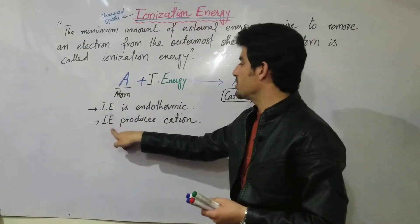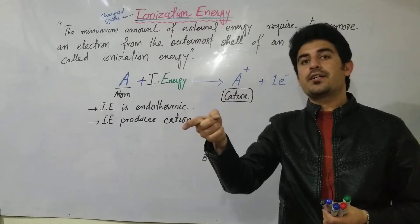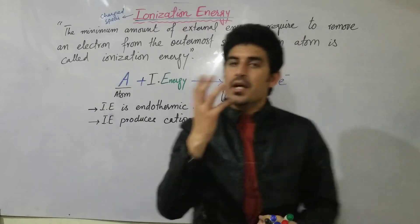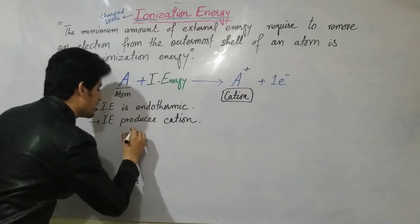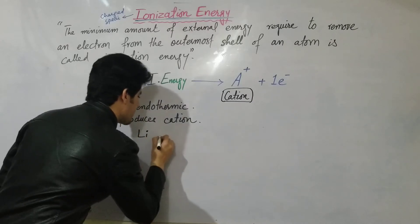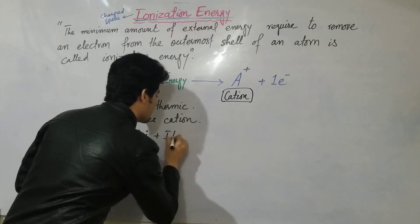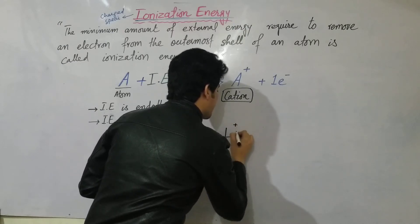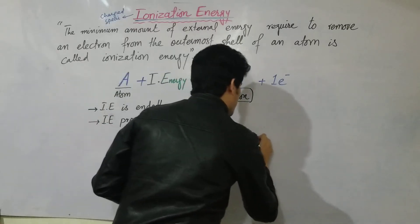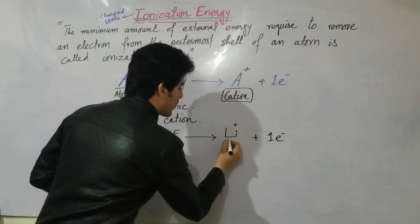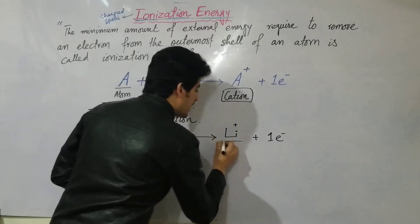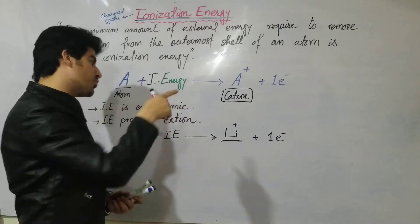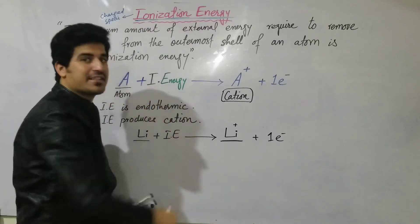Ionization energy always produces a cation — it converts the atom into a cation and removes an electron. Let's take an example: for a lithium atom, when we apply ionization energy, it converts lithium atom into a lithium cation and one electron is removed. The energy applied in this process is called ionization energy.